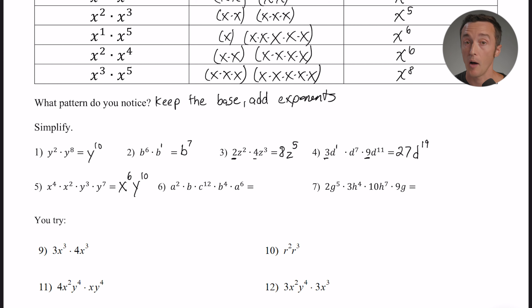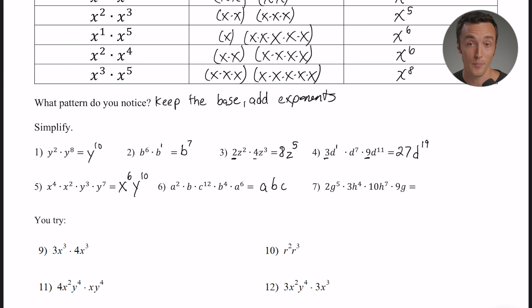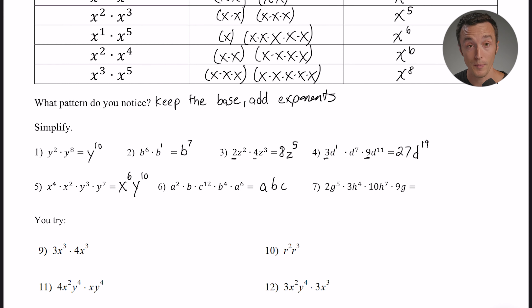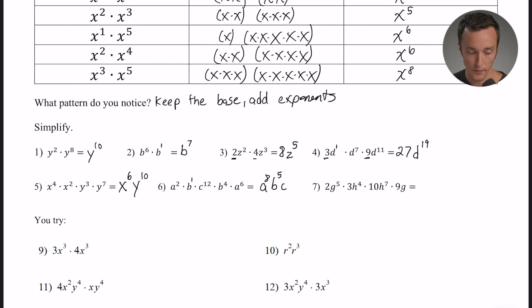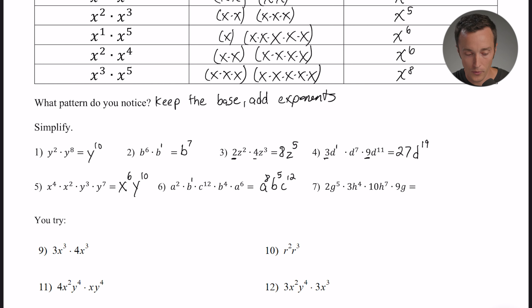This could get as complex as you want with as many variables as you like — you apply the rule the same way. Number six has bases a, b, and c. For the a's: a squared and a to the sixth give a to the eighth. For the b's: b to the first and b to the fourth give b to the fifth. There's only one c term — c to the twelfth — so it stays as c to the twelfth. The answer is a to the eighth, b to the fifth, c to the twelfth.